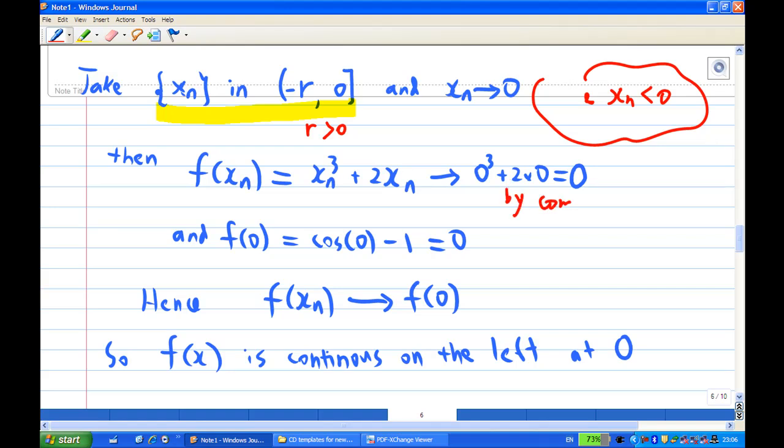And what is so special about this zero here, because f of zero, according to the definition, in this case, f of zero is cosine zero minus 1, which is also zero. So, we now have f of xn converges to f of zero, and xn converges to zero. So, we conclude that the function is continuous on the left at zero.